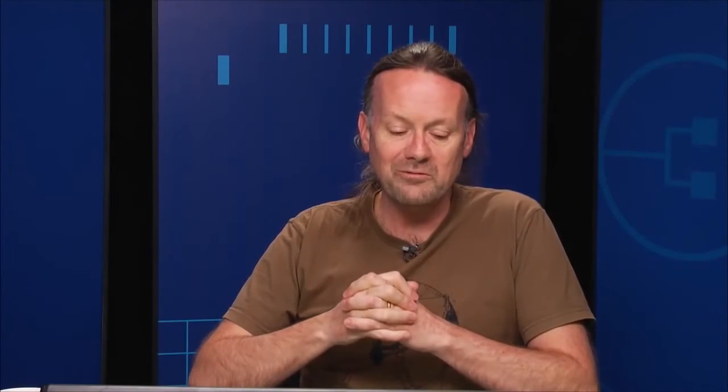Because we're converging now, our tiles are going to be the same. It used to be that Windows Phone and Windows had different tile sizes. Now that we have a single binary, we had to bring those together. With Windows 10 UAP, the tile assets have converged on the Windows Phone 8.1 model — the 44x44, the 310x310, and 71x71. So if you're upgrading a Windows 8.1 or 8.0 store app, you need to go into your package.appx manifest and change those attributes to the new ones: square 44x44 and square 71x71.